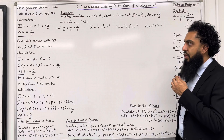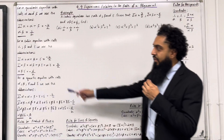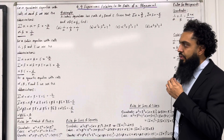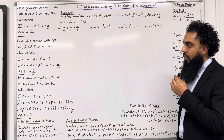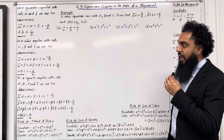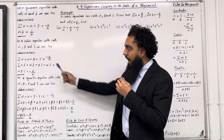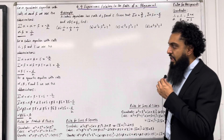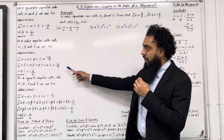For a cubic equation with roots alpha, beta and gamma we use the abbreviations. Sum of alpha, the sum of the individual roots, is equal to alpha plus beta plus gamma which is equal to minus b over a. Sum of alpha beta, the product of pairs of roots, is equal to alpha beta plus beta gamma plus alpha gamma which is equal to c over a.